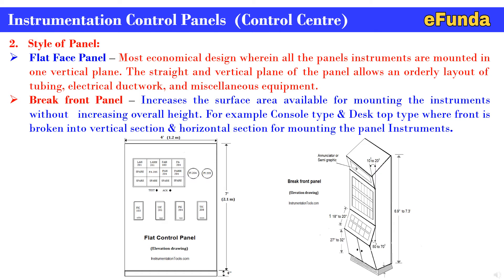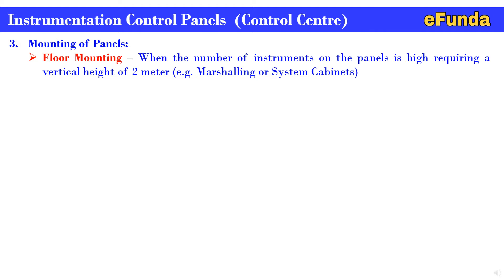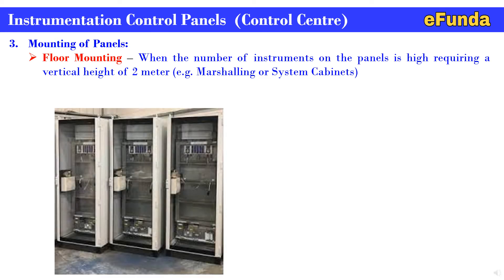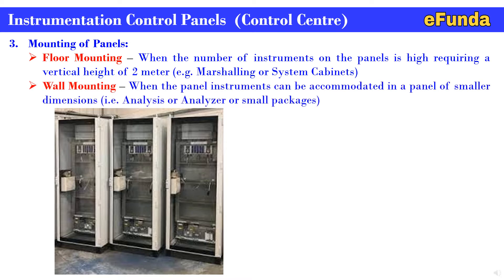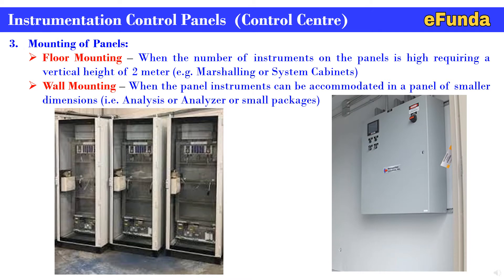Mounting of panel: first, floor mounting — when the number of instruments on the panel is high, requiring a vertical height of 2 meters, for example marshaling or system cabinets. You can see the photograph where a 2-meter height vertical panel is floor-mounted to cover the required number of instruments needing high space. Second, wall mounting — when the panel instruments can be accommodated in a panel of smaller dimensions, such as analyzers or small packages. The photograph shows wall-mounted panels for small or fewer instruments requiring less space.